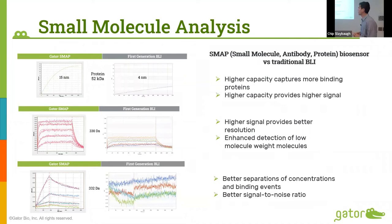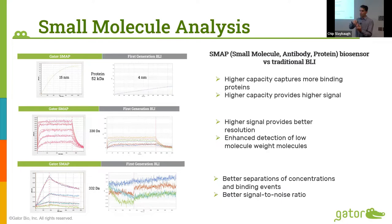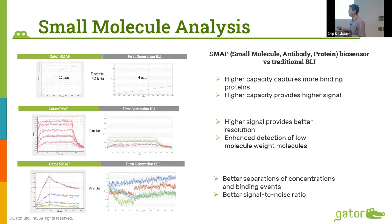We also have a small molecule probe that has been giving phenomenal data with very small molecules — which is a difficult thing to do on a BLI instrument. When analytes drop below one kilodalton, you get a lot of noise and the binding doesn't produce much of a shift in the interference pattern. Using these small molecule probes, we've enhanced the signal from these analytes. We have examples down to a 330 Dalton interaction and also 332 Daltons.